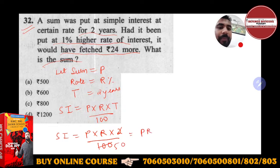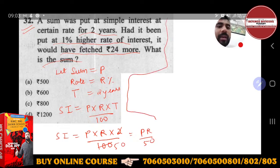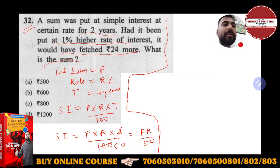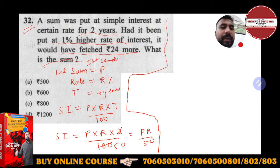Now apart from this, what is given to you? Had it been put at 1% higher rate. This was the first condition. Take your first condition. This is SI1. The second condition, what is it saying?